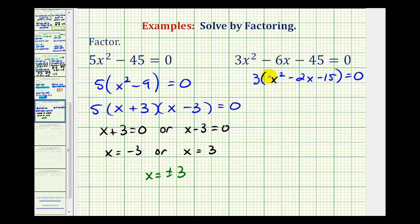Notice the trinomial factor has a leading coefficient of 1, so let's see if we can factor this into two binomial factors. We would have 3 times two binomial factors equals zero.